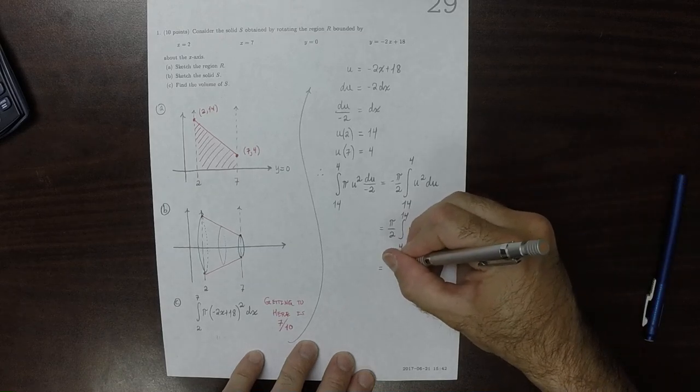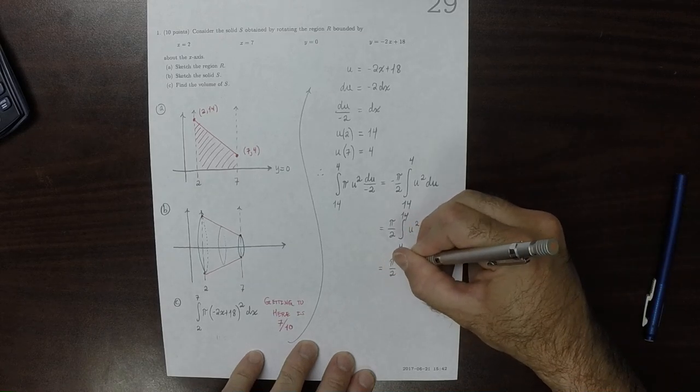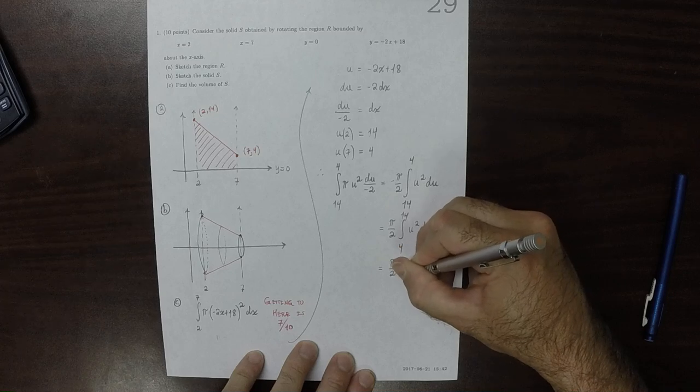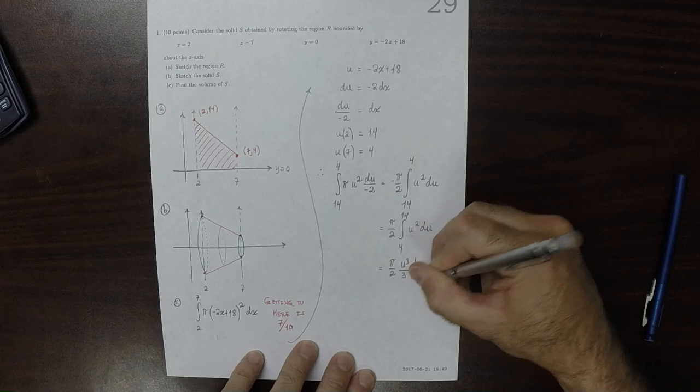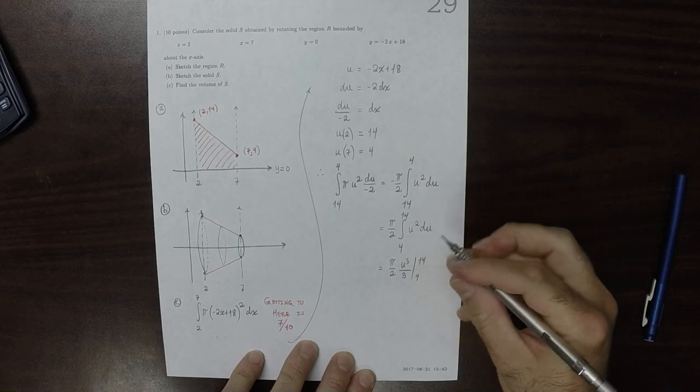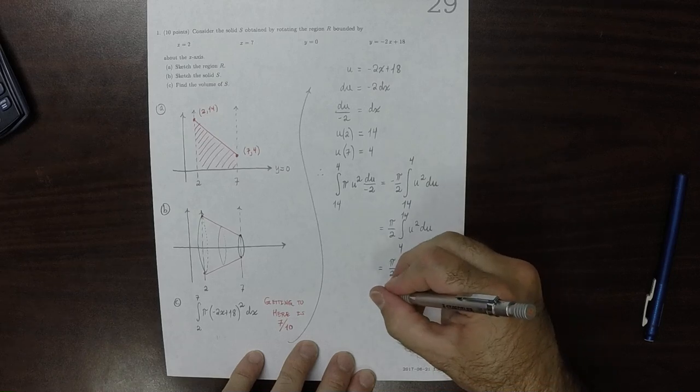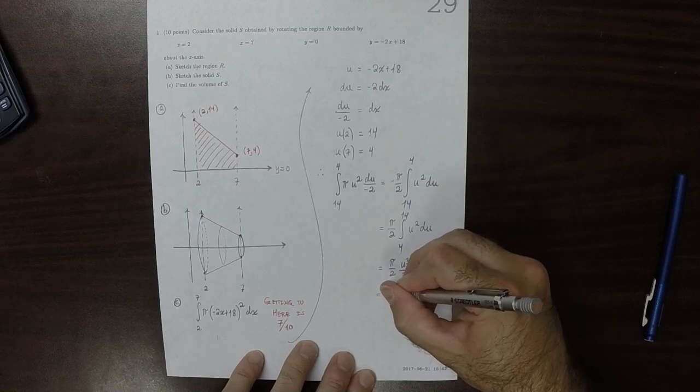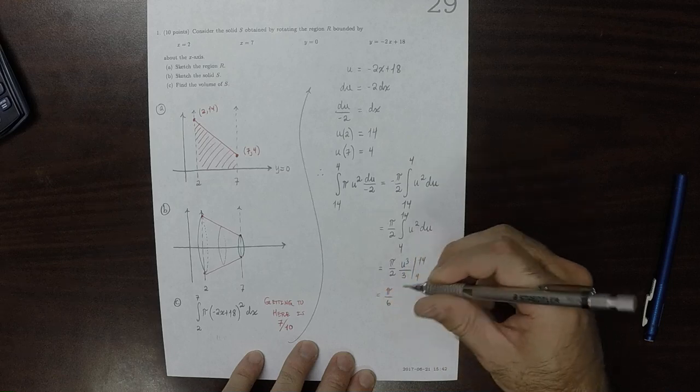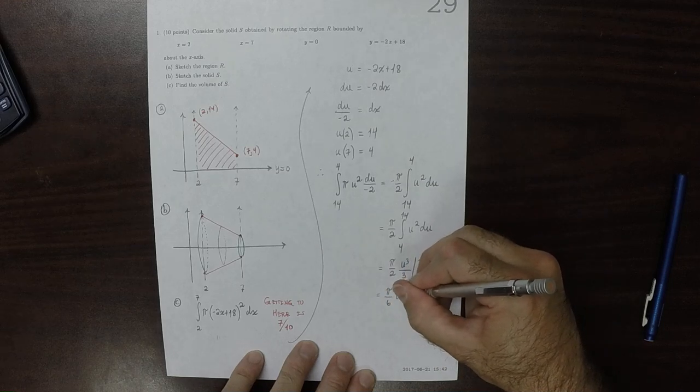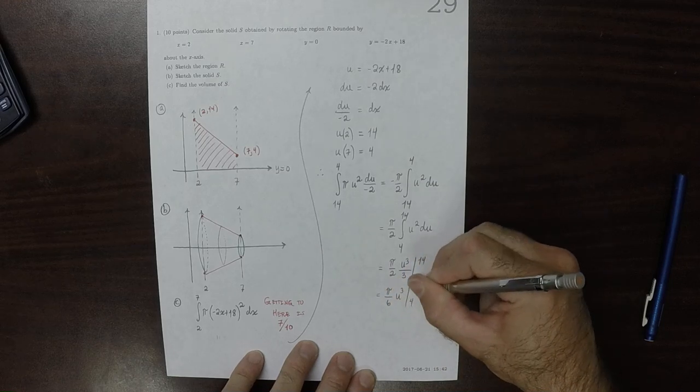So then that would be pi over 2, u cubed over 3, from 14 to 4. So I'll factor out that 1 third and get pi over 6, u cubed from 4 to 14.